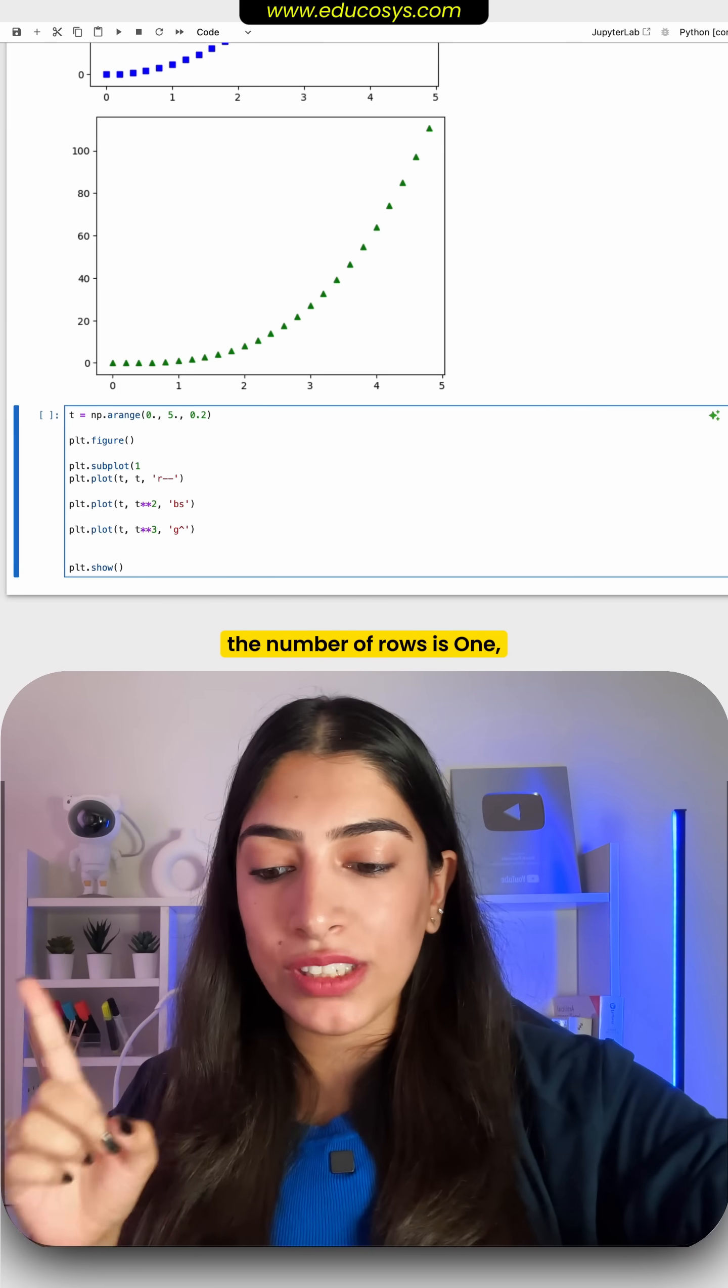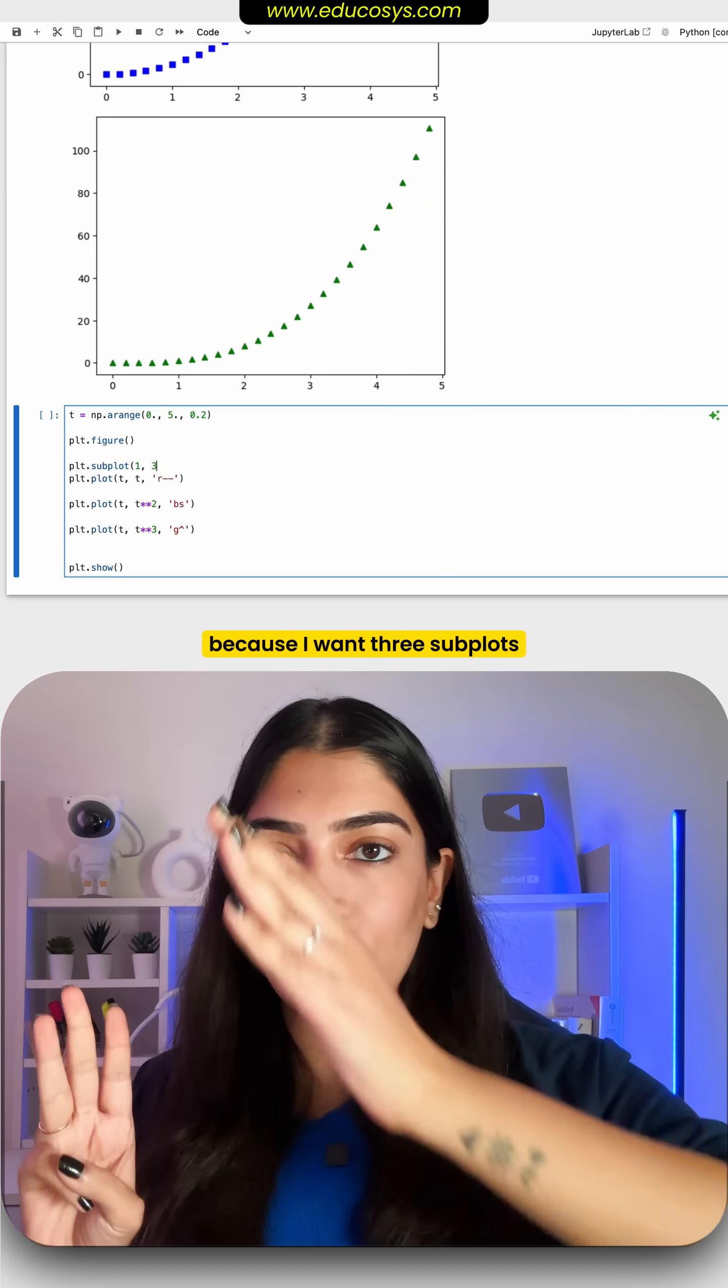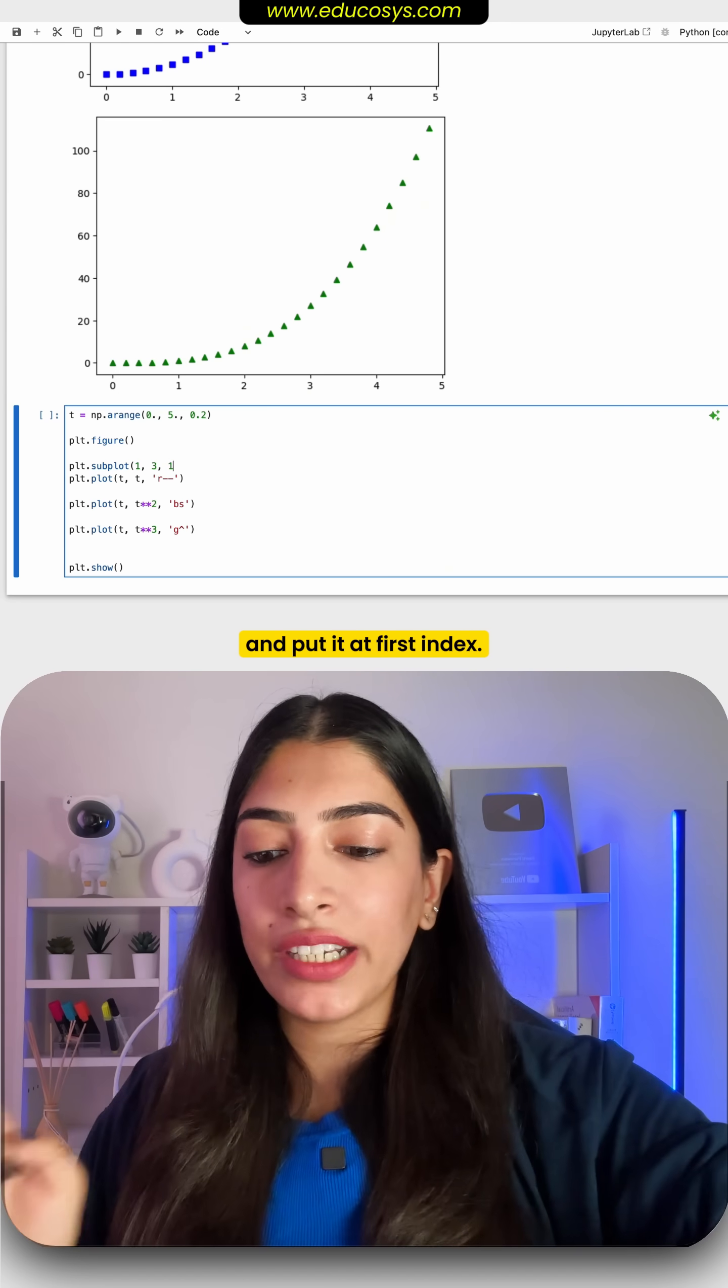So I am going to say the number of rows is one, the number of columns is three. So I want three subplots and put it at first index.